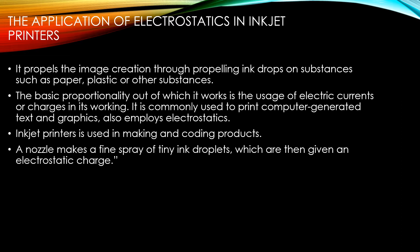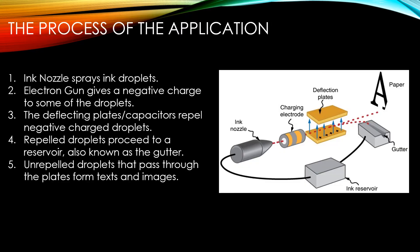Inkjet printers are used in making and coding products. A nozzle makes a fine spray of tiny ink droplets, which are then given an electrostatic charge. We'll explain that in the next slide — the process of the application and how electrostatics are used in inkjet printers.